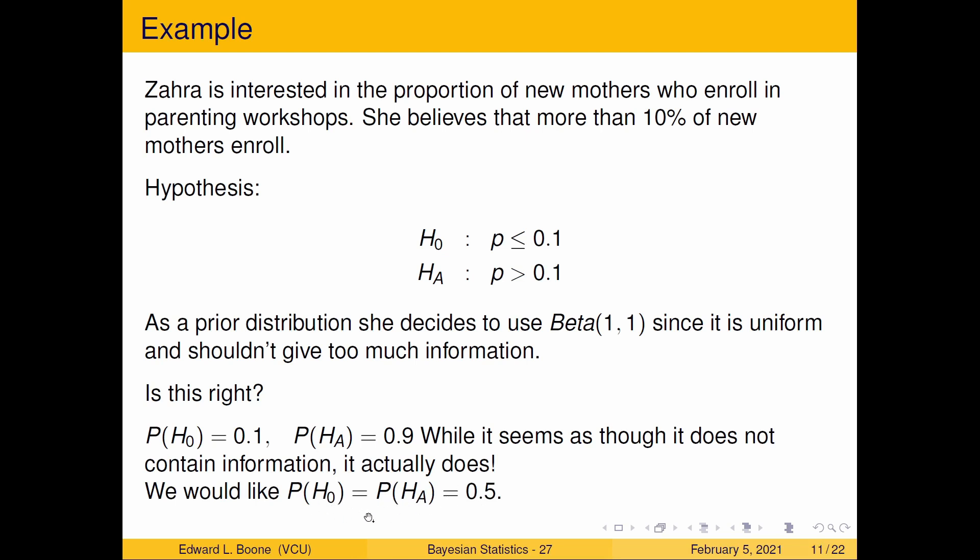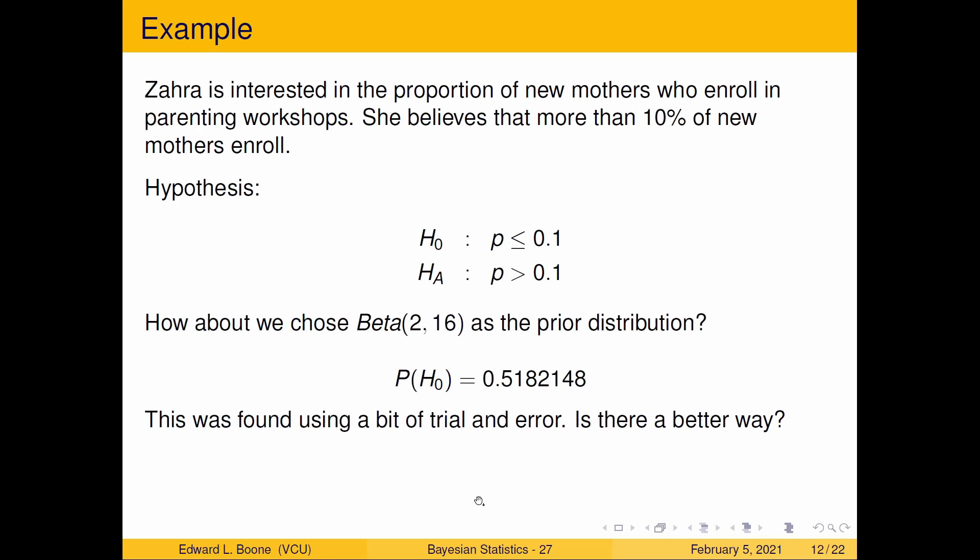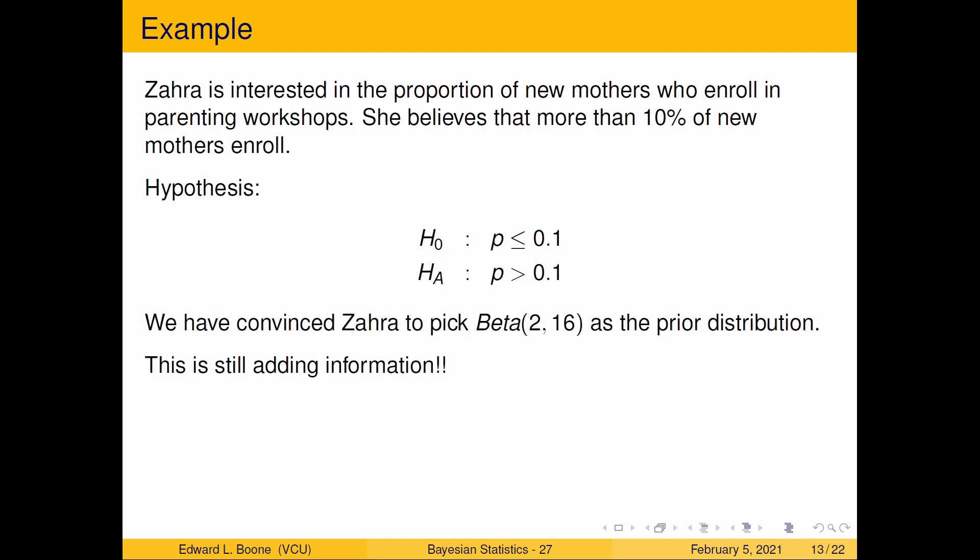We would like both of these to be very similar in value when we start if we really have no preference of one over the other. If you go around and play with the beta distribution with a little bit of trial and error, you can come up with a Beta(2,16) that has the probability of H naught equal to 0.51. Is there a better way to do this? Yes there is, but right now we're just trying to be easy. We've convinced her to use this prior distribution.